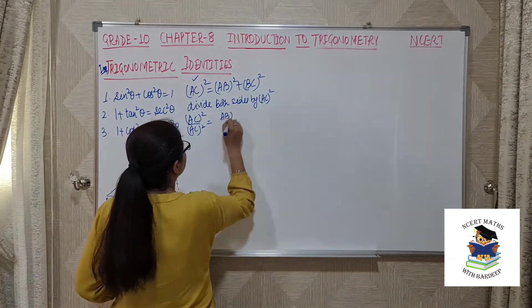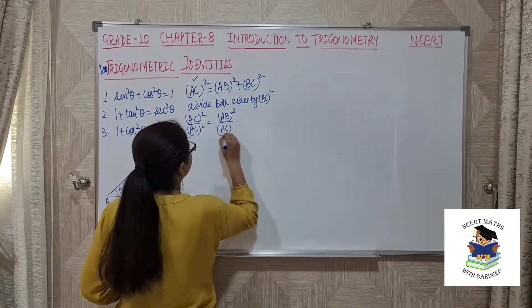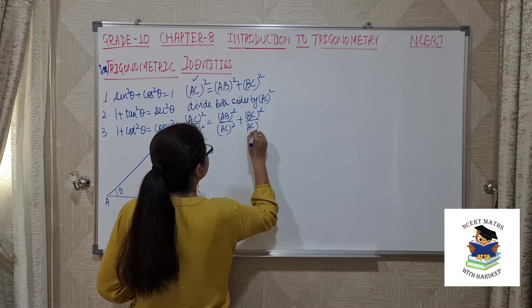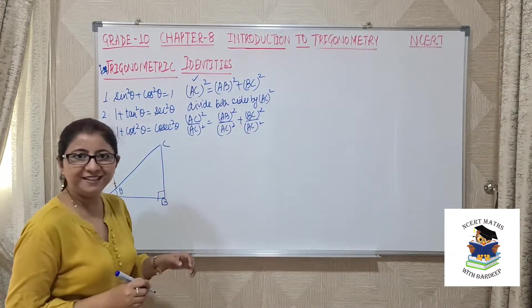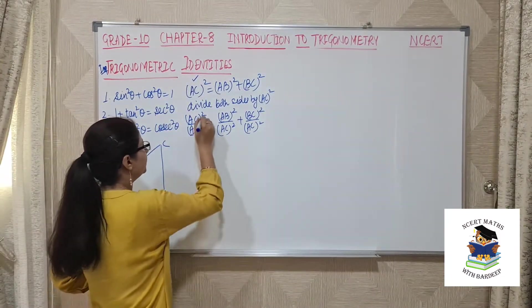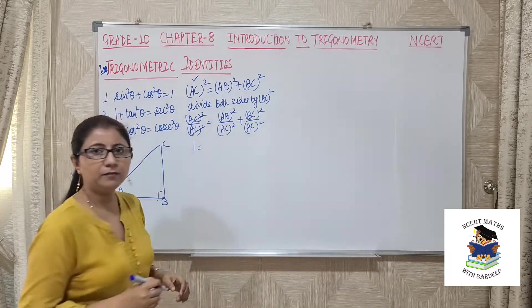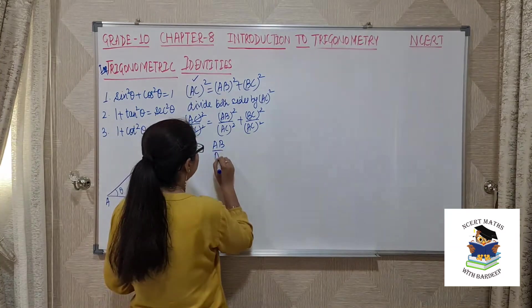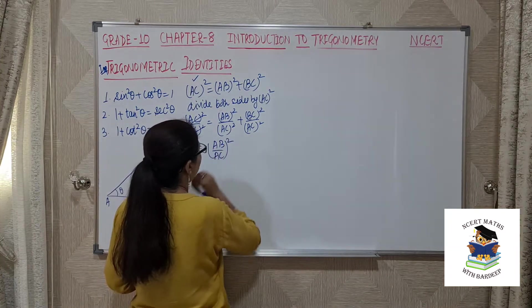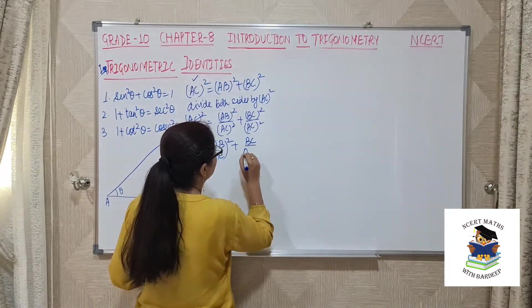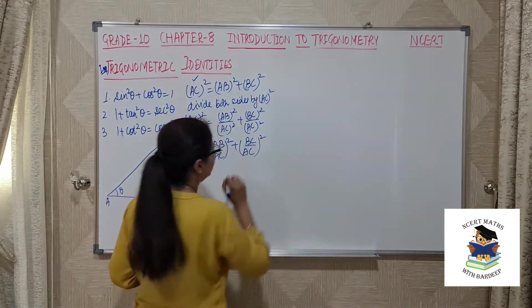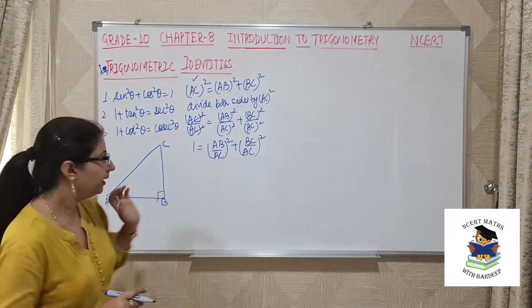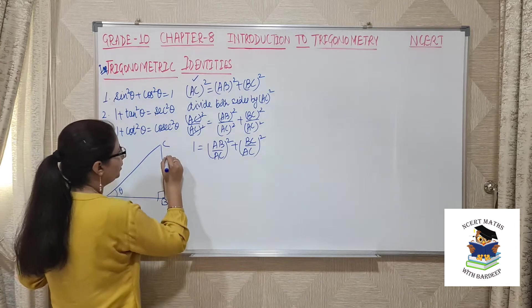AC²/AC² cancels to give 1. Using laws of exponents, we get (AB/AC)² + (BC/AC)² = 1. Now let's identify the ratios: AB is the adjacent side (base) and AC is the hypotenuse. So AB/AC is the ratio of base over hypotenuse.